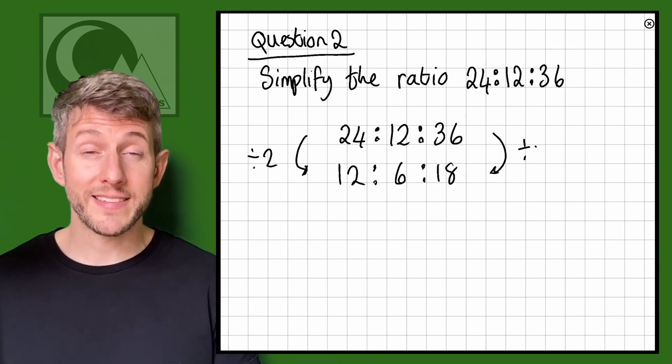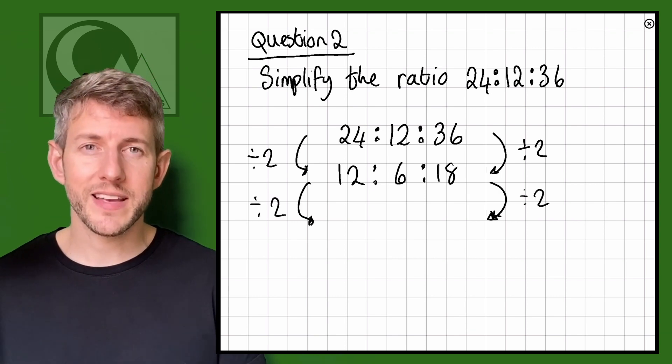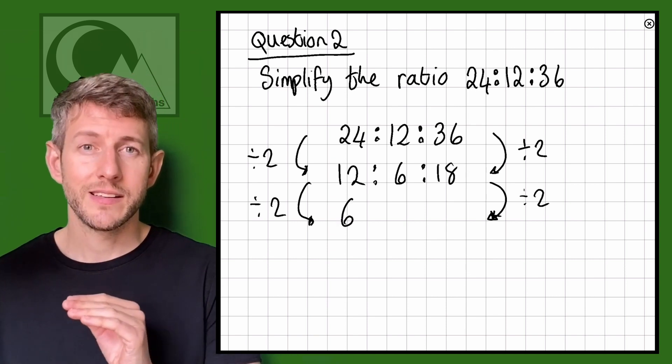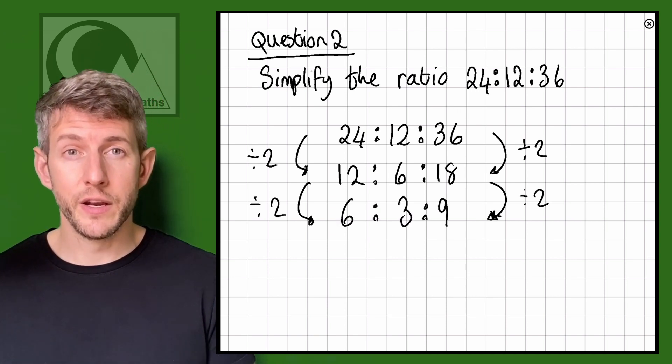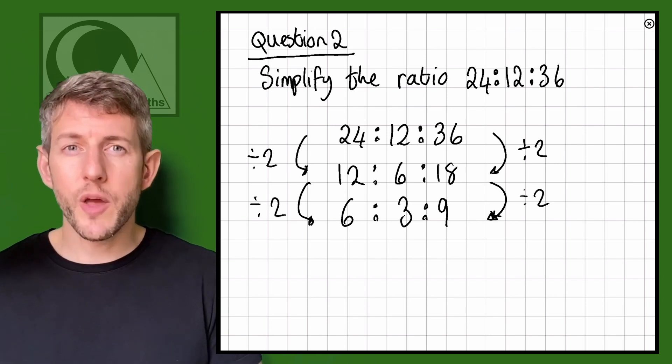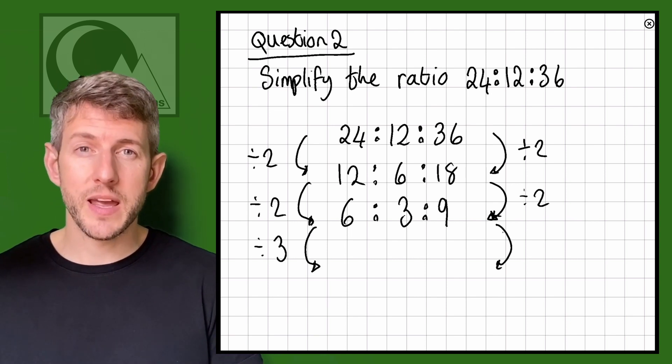12 to 6 to 18, I can see that I can halve all of those as well. If I halve each one of those I'm going to get 6, 3, 9, and now there's odd numbers in there so I know that I can't halve them anymore, but all of these numbers are in the three times table.